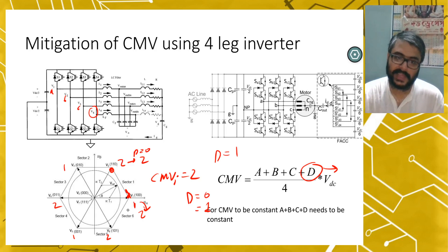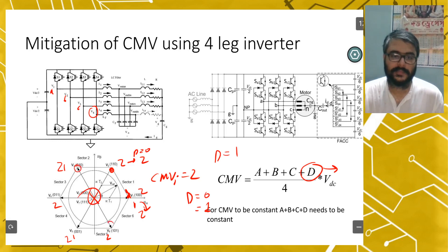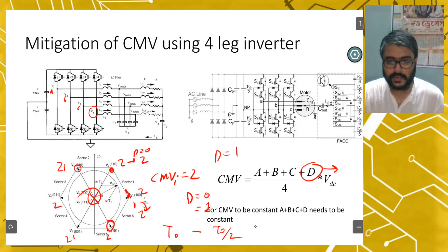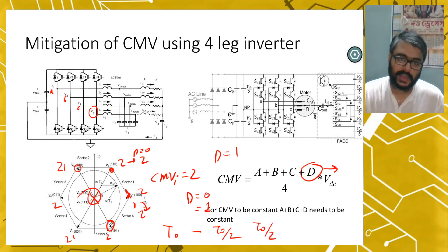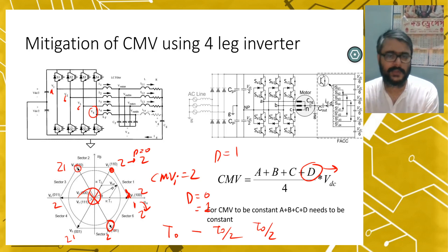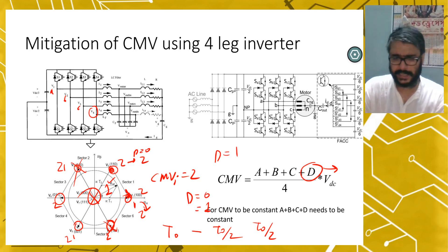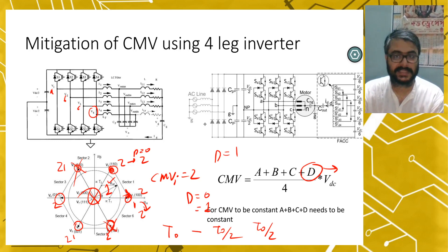For example, if A plus B plus C is 1 at one vector, you set D equal to 1 to make the total 2. If A plus B plus C is 2, you set D equal to 0 to keep the total at 2. So when transitioning between vectors, the CMV index stays constant at 2. You use active zero state PWM — use two vectors to implement the zero vector, dividing T0 into T0/2 and T0/2. This is how CMV mitigation is done using a four-leg inverter.